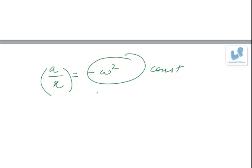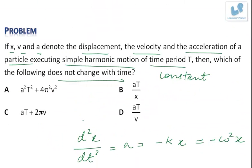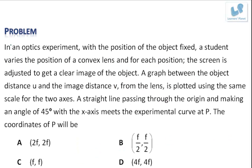So a/x multiplied by T will give us -ω²T, which is also a constant. Now look at the options that are given to us. Option B is having (aT)/x, which is a constant, so option B is correct.